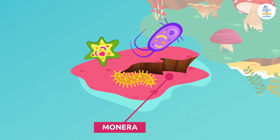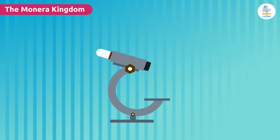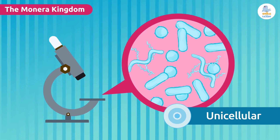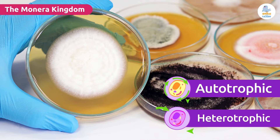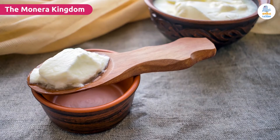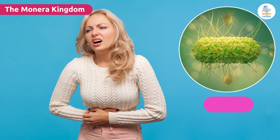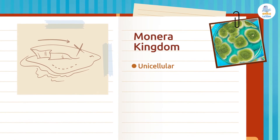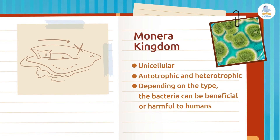The monera kingdom is characterized by the simplest and most primitive forms of life, made up of unicellular organisms. These organisms are so small that you can only see them with a microscope. Bacteria can either make their own food or take it from the environment, meaning they can be autotrophic or heterotrophic. Did you know there are some beneficial bacteria for humans, like those that make yogurt, and others that are harmful and can cause diseases such as salmonella?